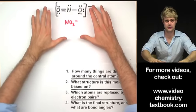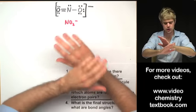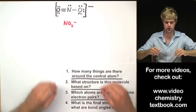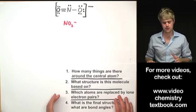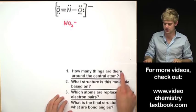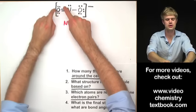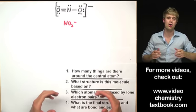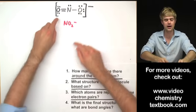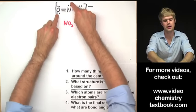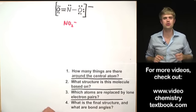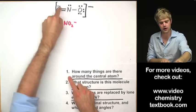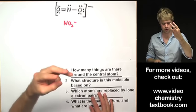Next is NO2⁻ — the whole thing is an ion with a one-minus charge. Charges don't have any impact on the VSEPR shape, so don't worry about that. Step one: how many things are there around the central atom? Single bonds and double bonds count the same — all that matters is that it is a bond. We have two bonds and one unshared electron pair, giving three total things around the central atom.